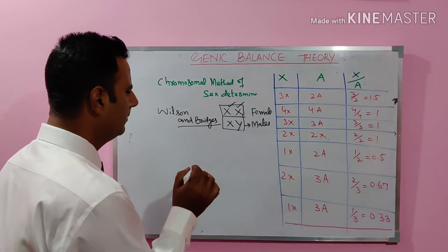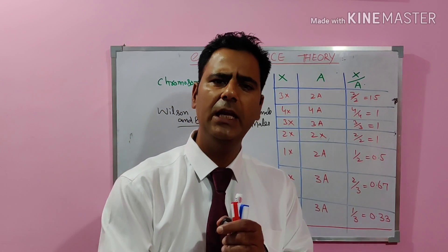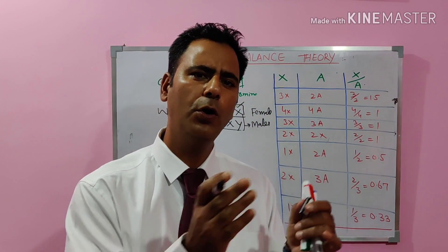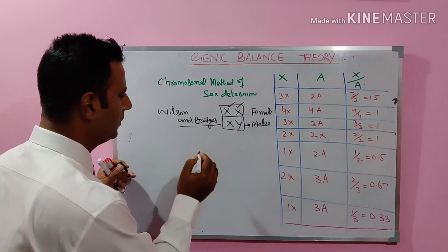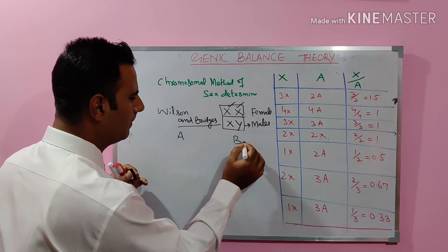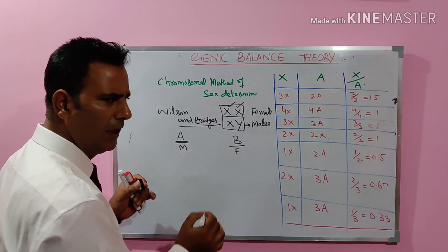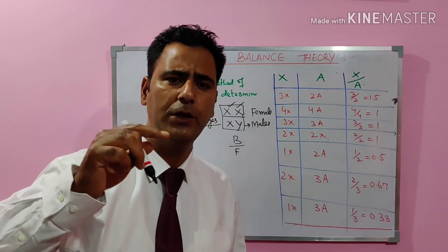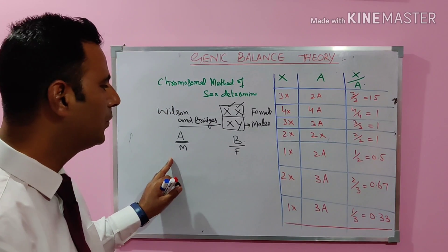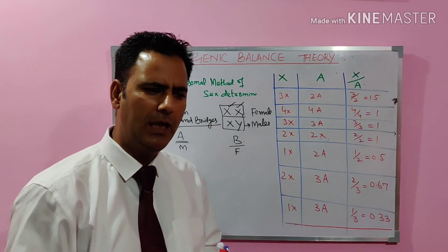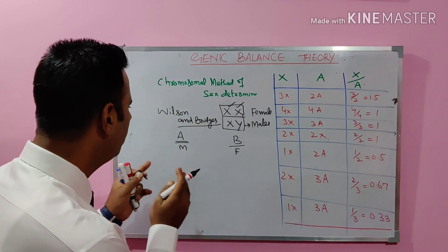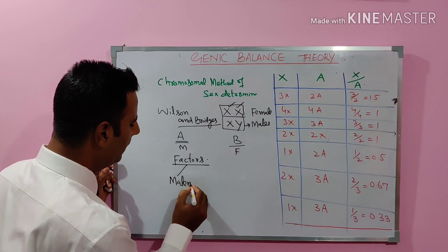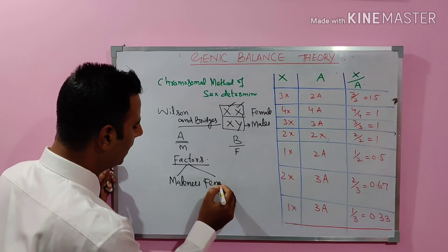According to Wilson and Bridges, every individual, whether male or female, has inherent capability for both maleness as well as femaleness. Every individual has a number of factors which are governing or coding for maleness, and a number of factors which are coding for femaleness.